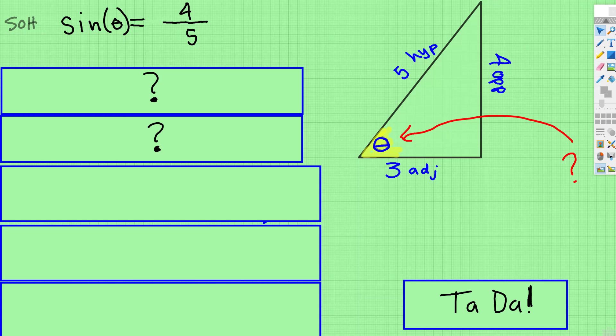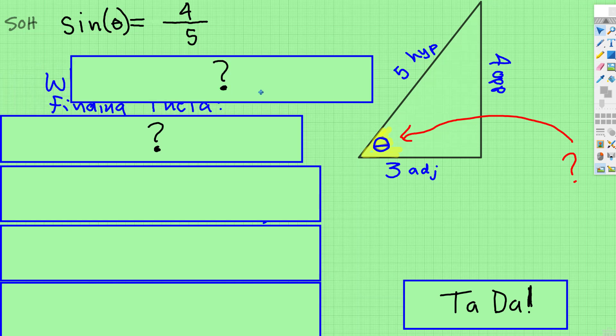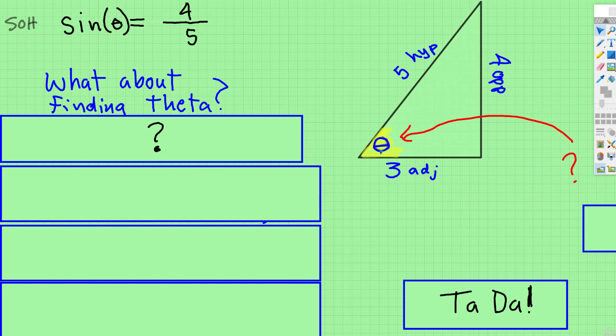Using the previous example in the previous video, if we have found the trig function sine, sine of theta is equal to opposite over hypotenuse, so four-fifths, what if we want to know what the measure of that angle is? What about finding theta? So those are the questions. How would you know that?